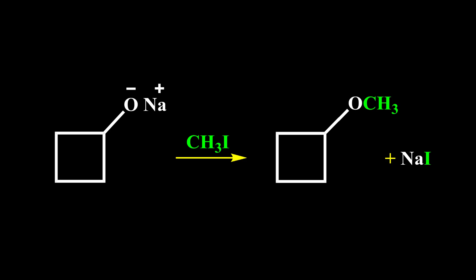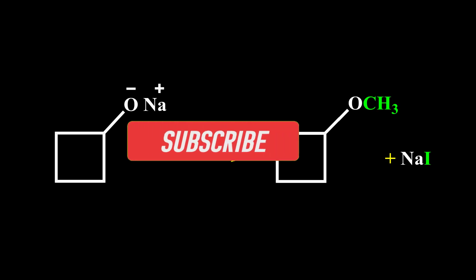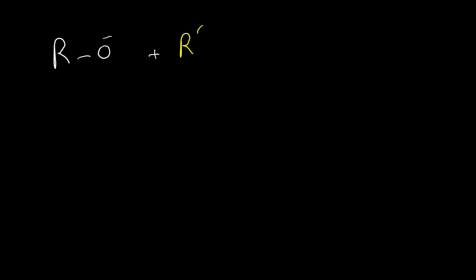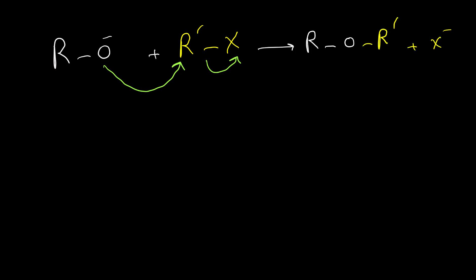Hello everyone, here is another video on the OrgTube channel. In this video I'm going to explain Williamson ether synthesis. Williamson ether synthesis is a reaction between an alkoxide anion and an alkyl halide. This reaction is an SN2 reaction, and the alkoxide anion can expel the leaving group, giving us an ether plus the leaving group.